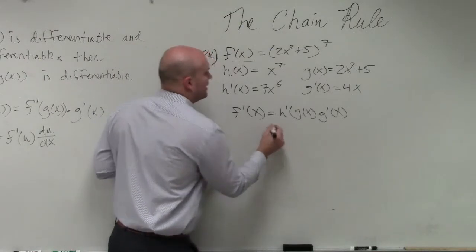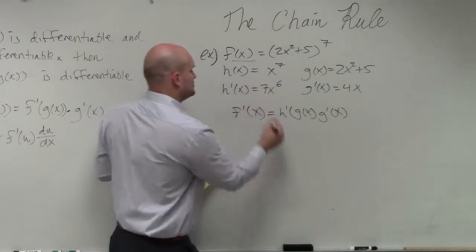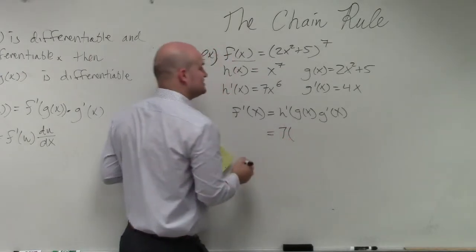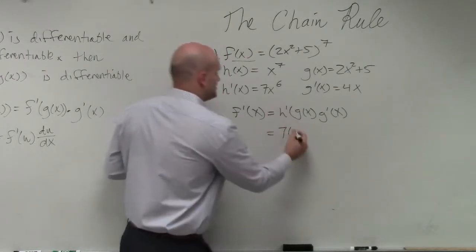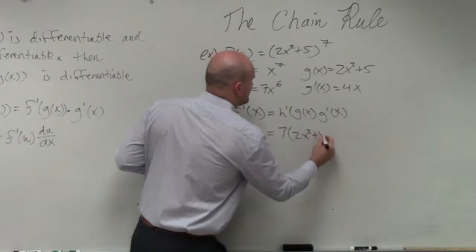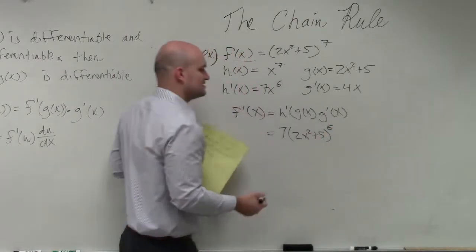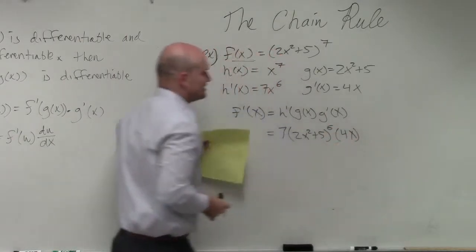So therefore, I have h prime, which is 7, times my g of x, which is 2x squared plus 5, raised to the sixth, times 4x.